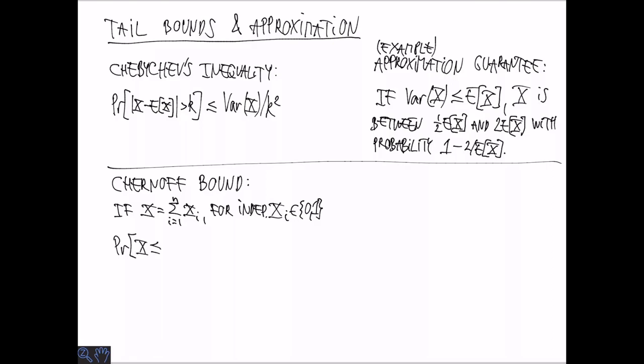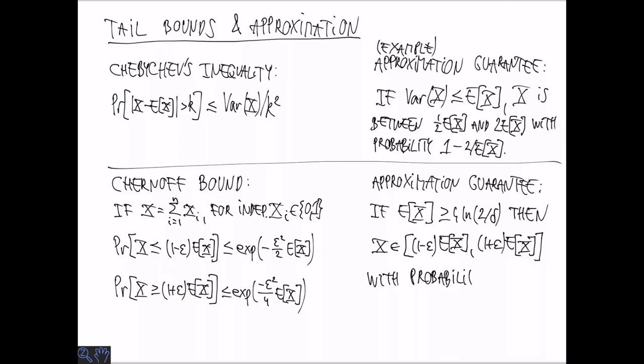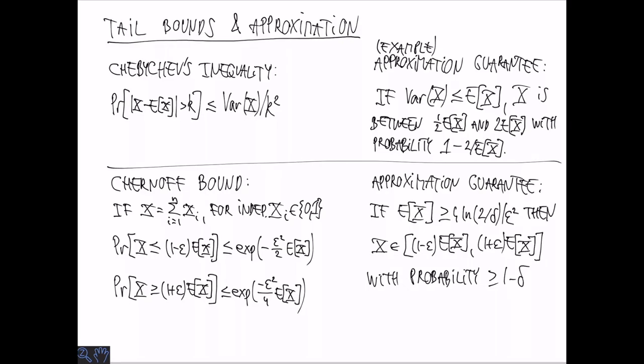The Chernoff bound gives considerably better bounds if we are far from the expectation. And also tells us something quite close to the expectation. So again, remember that we are considering a sum of random indicator variables. The probability that we get something that is at most one minus epsilon times the expectation, or one plus epsilon times the expectation is exponentially small in the expectation as I claimed before. And the constant in the exponent is related to epsilon squared. So for the lower side, it's epsilon squared over two. And for the upper side, it's epsilon squared over four. And there are different variants of this. In terms of approximation guarantee, we see that if the expectation is more than four log two over delta divided by epsilon squared, then we get that x is in the interval one minus epsilon times the expectation to one plus epsilon times the expectation with probability at least one minus delta.